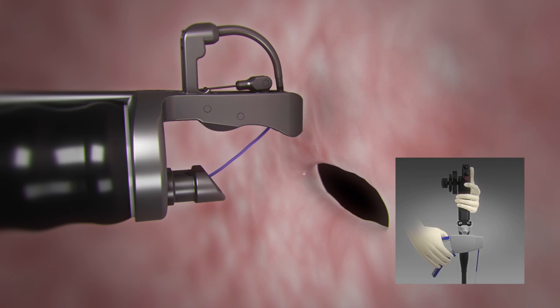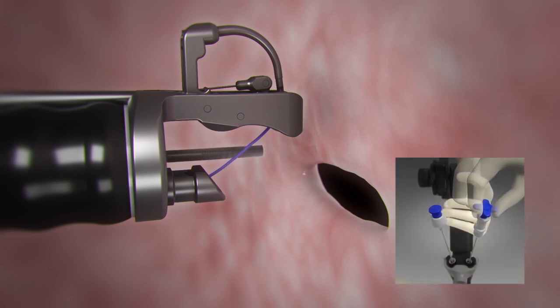Open the needle driver handle. Advance the tissue helix through the 2.8 millimeter scope channel. Push down on the blue knob to expose the helix.